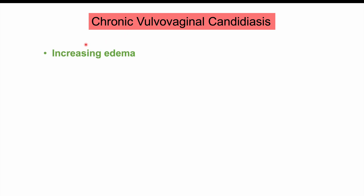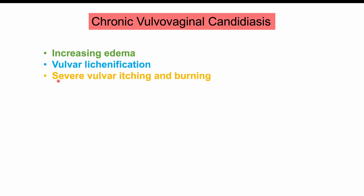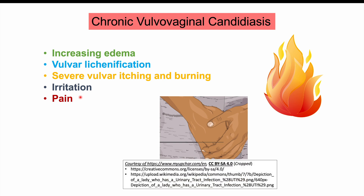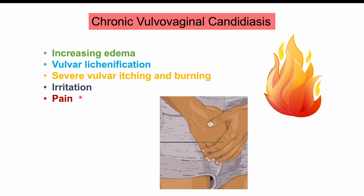Chronic vulvovaginal candidiasis is essentially a worsened state of the acute form. It features increasing edema, vulvar lichenification — where the vulva becomes thickened — severe vulvar itching and burning, and irritation and pain. Discharge is often not present in the chronic form. This is commonly seen in older patients with immunosuppression or long-standing type 2 diabetes.